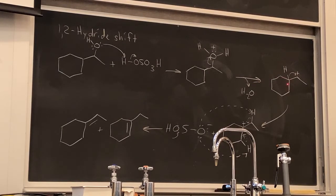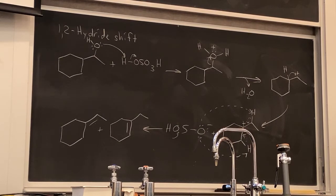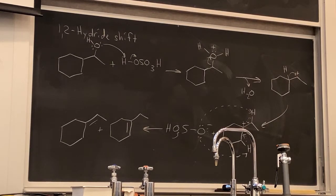You can have rings undergo migrations or ring expansions, so alkyl groups that are part of a ring can participate in a rearrangement. Usually that happens when you have a smaller ring relieving ring strain — going from three to four or four to five membered rings. We wouldn't see it in this particular case because there's no strain in our six-membered ring, and we would only go from secondary to secondary. Migrating the hydrogen to go from secondary to tertiary is the better option. Usually you'll be able to figure out which group undergoes migration because there will be a clear winner in terms of the most stable carbocation.